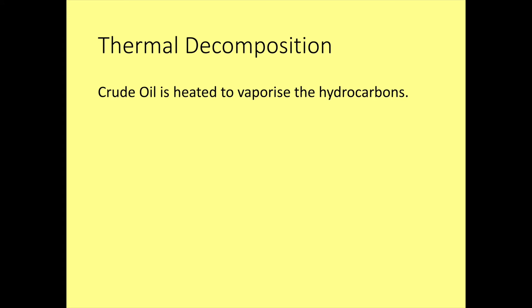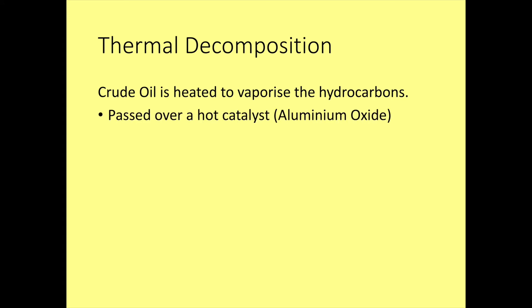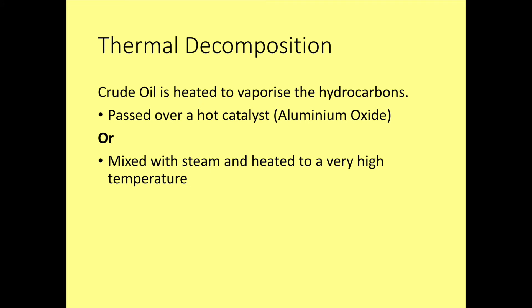We heat our crude oil to vaporise the hydrocarbons. We can then either pass it over a hot catalyst of aluminium oxide, or we can mix it with steam and heat it to a high temperature. So there are two different ways in which we can crack hydrocarbons. This is a chemical change because we're breaking bonds, and indicators of chemical reactions include bubbles of gas, colour change, or changes in temperature.